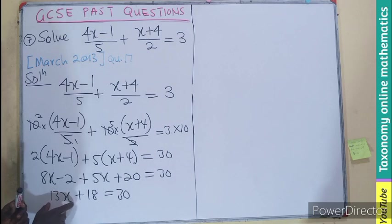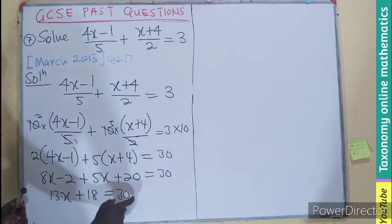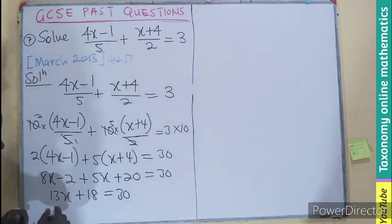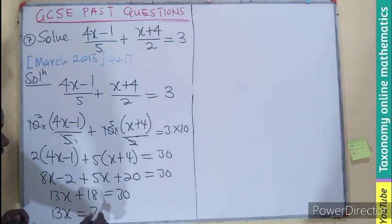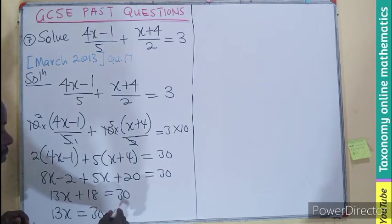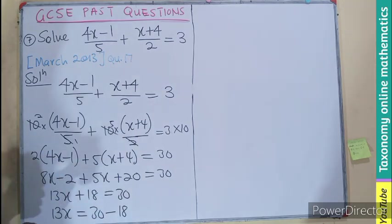Now we have a single variable term and a constant term to group. That makes 13x equal to 30. We subtract 18 from both sides, making the 18 move to the right.